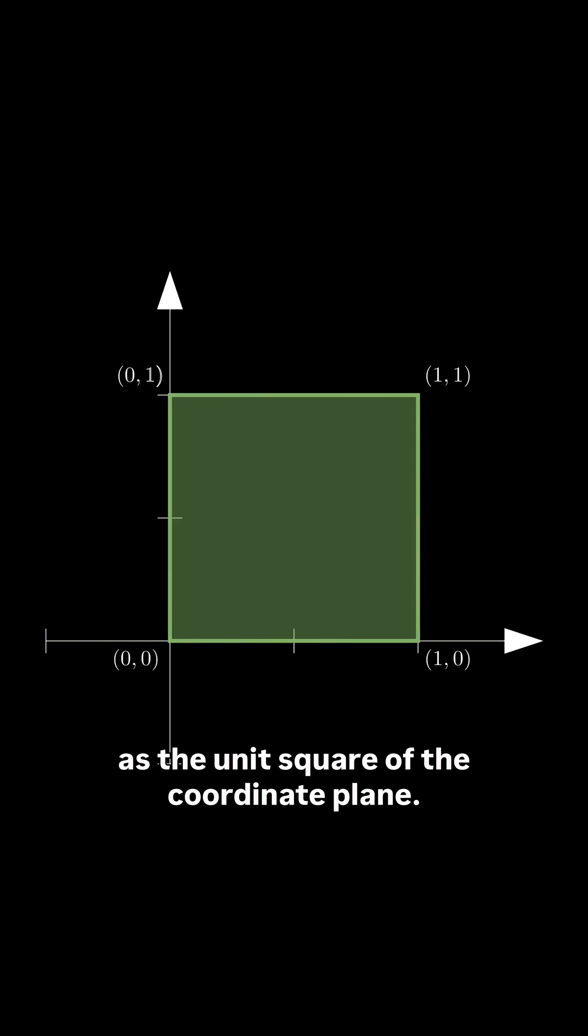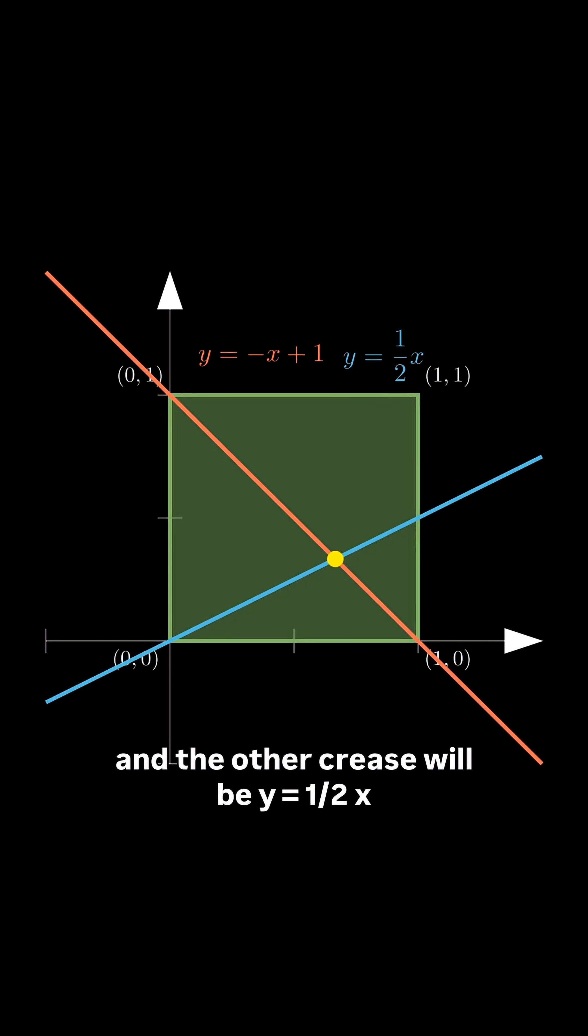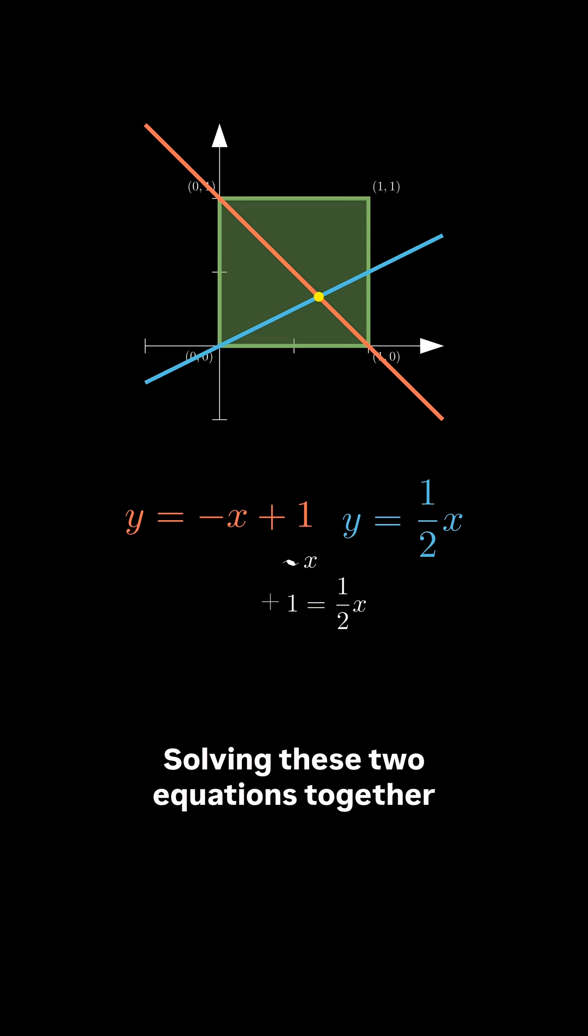So why does this work? Well, in origami, we model the paper as the unit square on the coordinate plane. Then each crease is a line equation. The diagonal crease is y equals negative x plus one, and the other crease will be y equals one half x. Solving these two equations together gives us exactly one third.